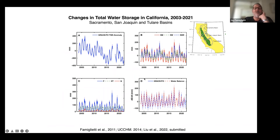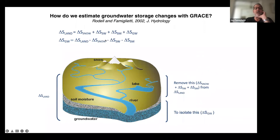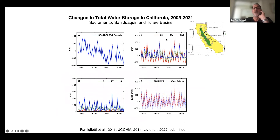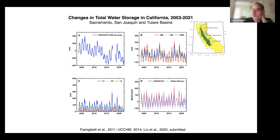Here's an example — our most recent example from the Central Valley in California. Here's the GRACE time series showing storage ups and downs, with distinct phases of drought: 2006 to 2010, 2011 to 2016, and now 2019 to the present. What we want to do is subtract the snow, surface water, and soil moisture. Soil moisture we took from NASA GLDAS average of the land surface models. Surface water we used California Department of Water Resources reservoir data. Snow water equivalent we used SNOWDAS, the Weather Service assimilated product. So we take B and subtract it from A — A minus B gives us the change in groundwater storage.